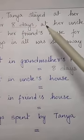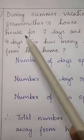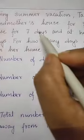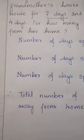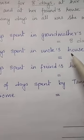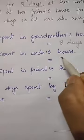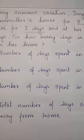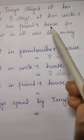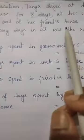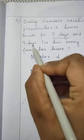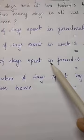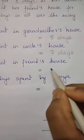Next part: at her uncle's house for 7 days. Number of days spent in uncle's house is equal to 7 days. The next part: at her friend's house for 4 days. Friend's house — how many days? It is 4 days. Statement: number of days spent in friend's house is equal to 4 days.